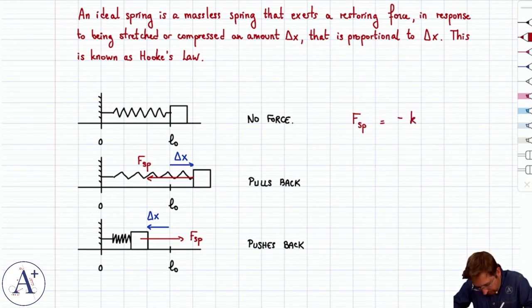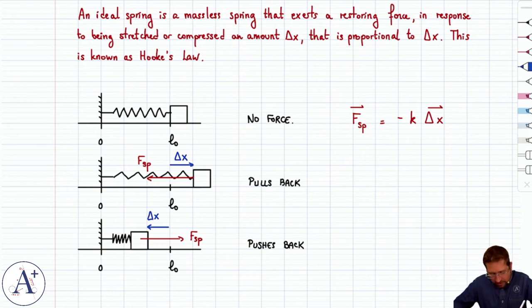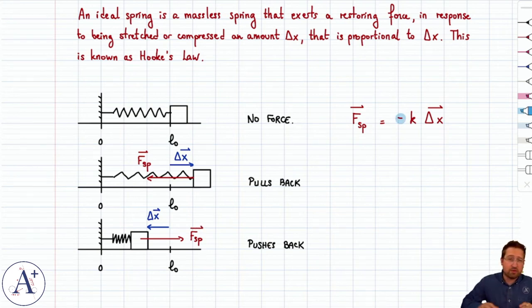That's F spring equals minus k delta x, and it's written as a vector. The argument is that you think of delta x as a vector because really it has a magnitude and a direction, so it's a vector technically. The minus sign throws everyone off all the time - at least half the students get it wrong on the exam just because they're off by a minus. Let's be clear: the minus only means that this spring force has a direction that is opposite that of delta x. Delta x is to the right, F spring is to the left. If delta x is to the left, F spring is to the right. So that's what the minus is for.